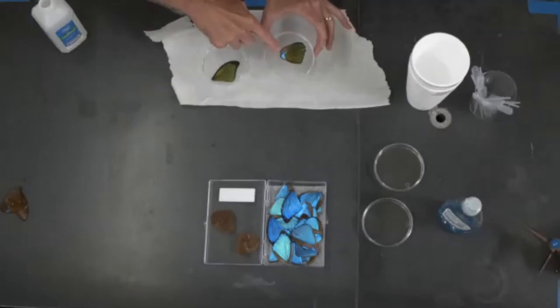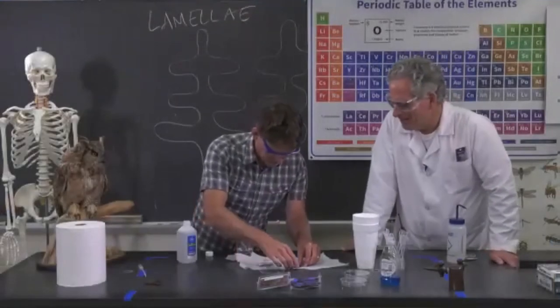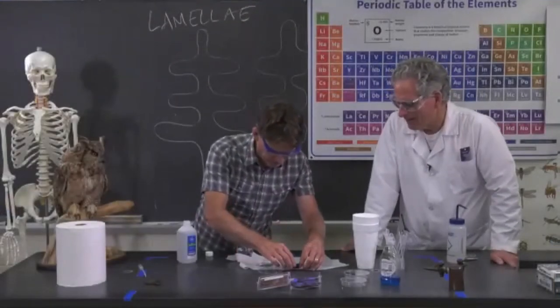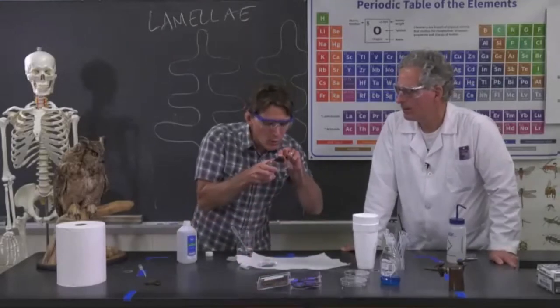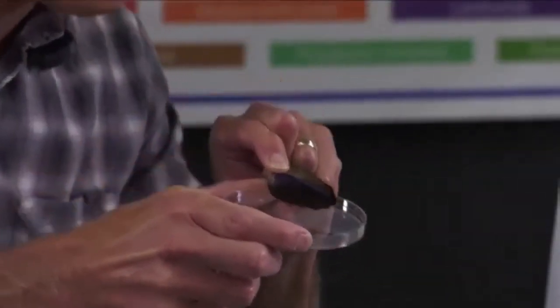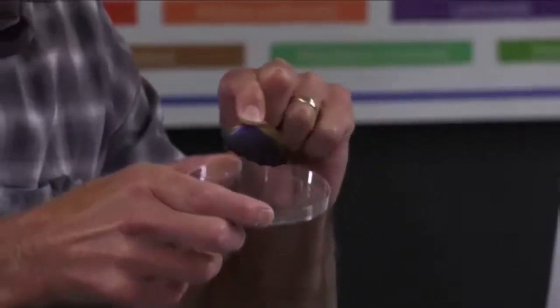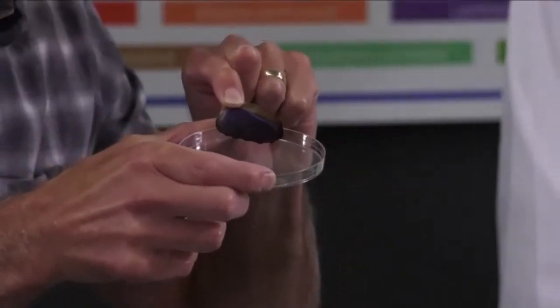I think it might be evaporating off here. Let's see if we can help it a little bit. Well, I blew it right off. I messed up my experiment. I'm going to try to get the alcohol to evaporate off of the wing by blowing on it and see if I can restore the blue color. I think it's working. Yes, I think we can see evidence that the alcohol is evaporating away.